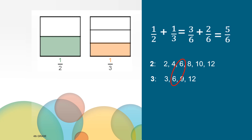Now I can make equivalent fractions with a denominator of six. You might already know that one-half is equivalent to three-sixths. But how can I figure out how many sixths are equivalent to one-third? I can use multiplication. Since I multiply the denominator — thirds — by two to get sixths, if I do the same thing to the numerator, I'll keep the fractions equivalent. I can see that one-third is equivalent to two-sixths. And now I can add three-sixths plus two-sixths to get five-sixths.